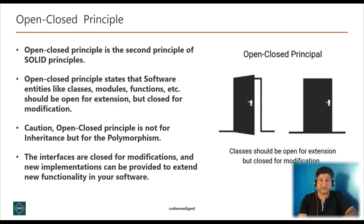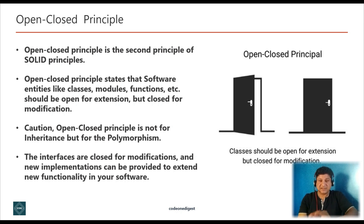Sir Robert C. Martin considered Open Close Principle the most important principle of object-oriented design, but he was not the first to define it. Sir Bertrand Meyer wrote about it in 1988 in his book 'Object-Oriented Software Construction'. The general idea is to write code so that you can add new functionality without changing the existing code. Don't mistake 'open for extension' with inheritance only, because inheritance introduces tight coupling if subclasses depend on implementation details of their parent class.